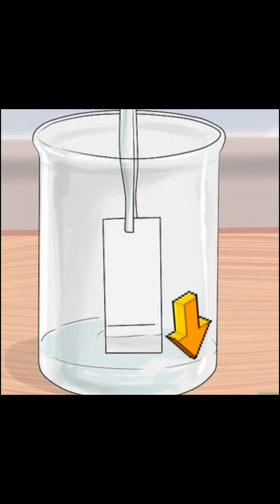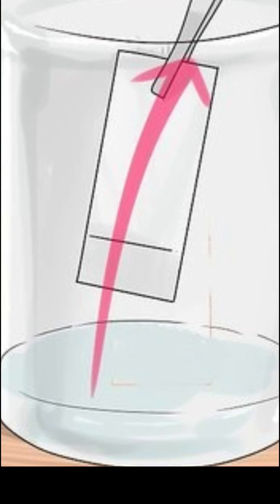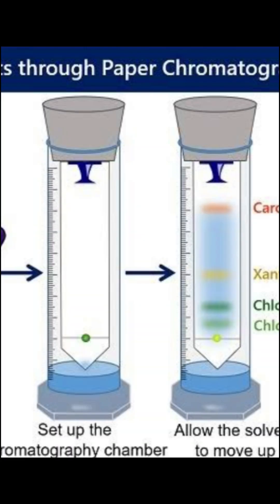Next, place the paper in the beaker. Suspend the paper vertically with the bottom edge dipped into the solvent. The sample spot should not touch the solvent directly. Then develop the chromatogram: allow the solvent to rise up the paper by capillary action. The different components of the sample will move at different rates and separate.